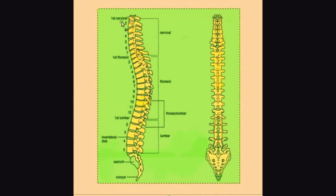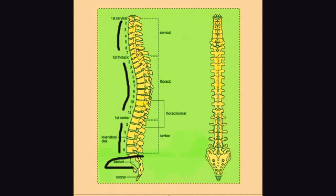The spine is divided into five major regions. These include the cervical region, the thoracic region, the lumbar region, the sacrum, and the coccyx. Most low back pain originates in the lumbar region.